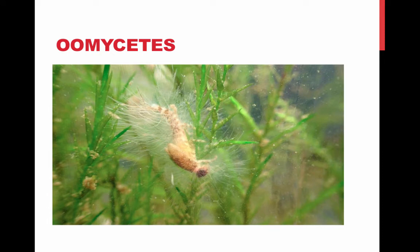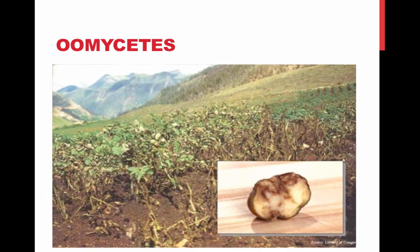Oomycetes include water molds, white rusts, and downy mildew. They were once considered fungi, but based on morphological studies are now in the protist kingdom. Most oomycetes are decomposers or parasites. One famous example with a huge ecological impact is the oomycete that caused potato blight, which was the cause of the potato famine in Ireland. It killed millions of people and caused a mass exodus of millions more, many of whom wound up immigrating to the United States.